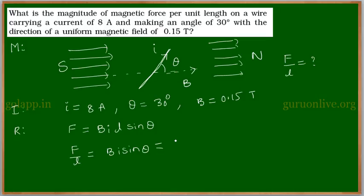That is equal to 0.15 into 8 into sin 30 degrees. That is equal to 0.15 into 8, sin theta can be written as 1 by 2, so 2 ones are 2, 4s are 8, that is equal to 0.6 Newton per meter. This is the force per unit length acting on that current-carrying conductor.